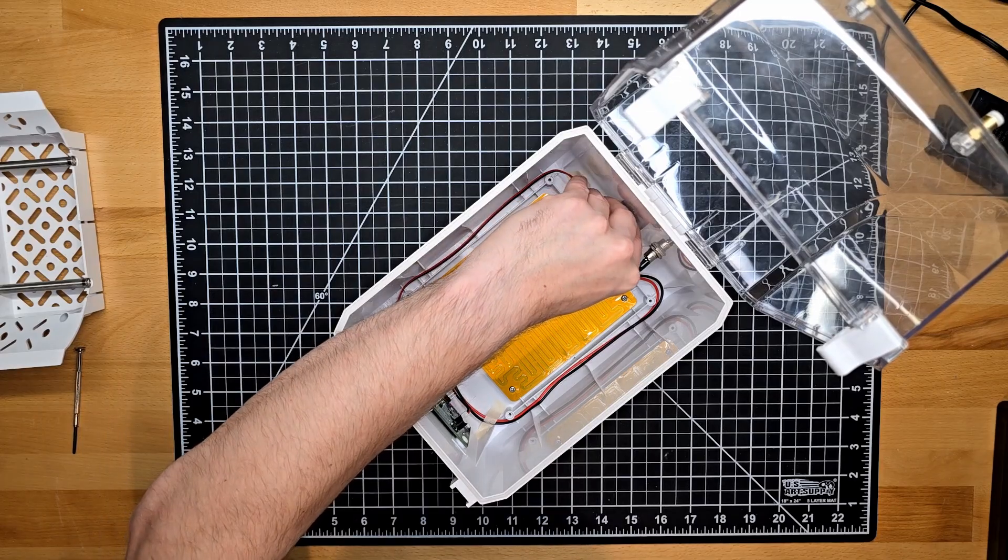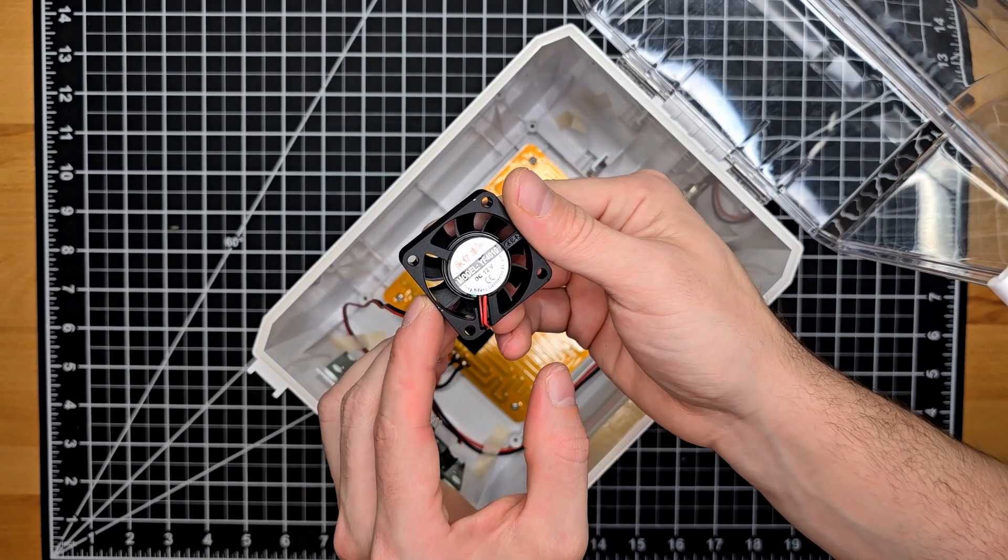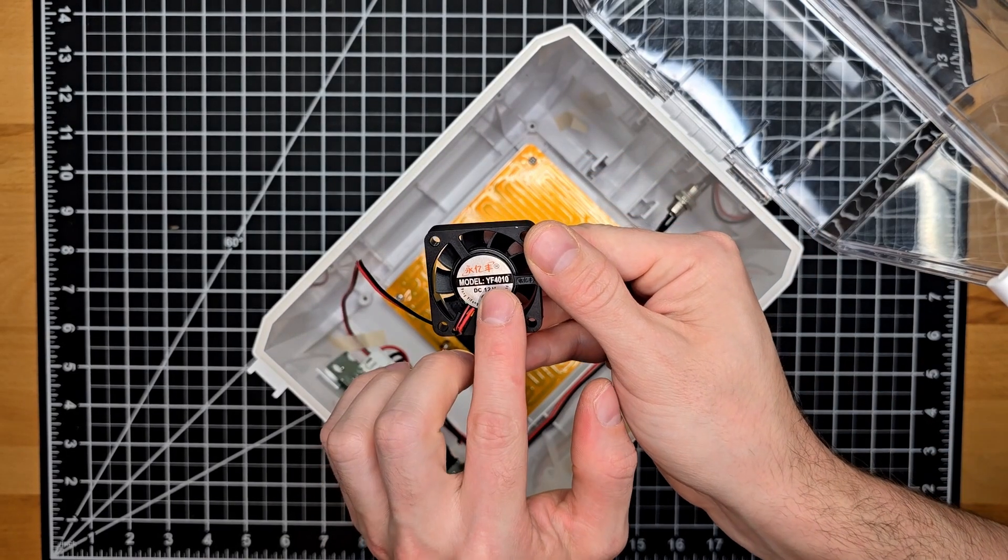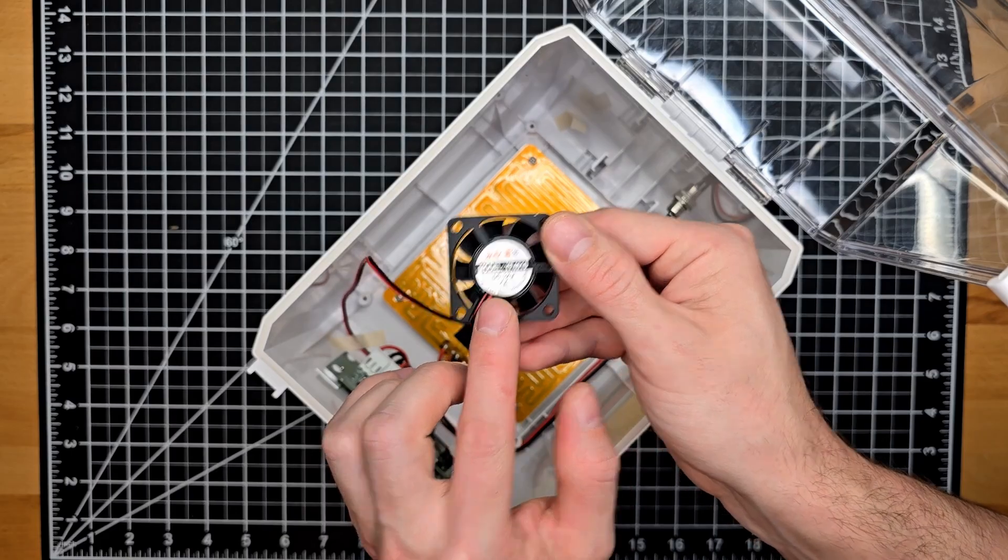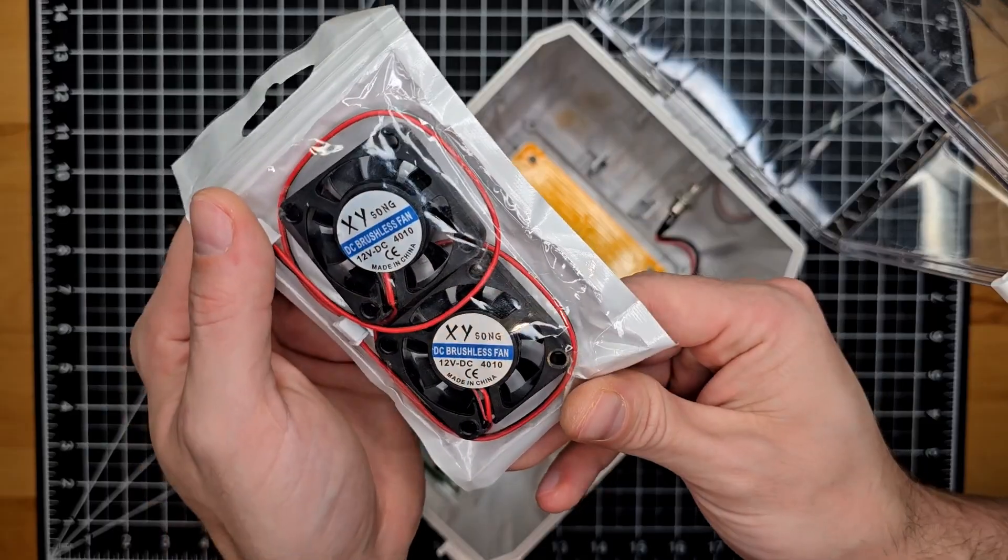Now that we've exposed the faulty fan we can pull it out of its slot. Taking a look at the label I'll note that it's a 4D10 12 volt for this Sovol and potentially ComGro system.